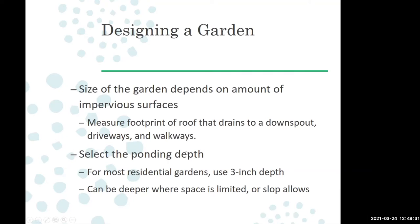Once you figure that out, decide how deep you want your ponding depth to be. If you're on a pretty flat site, three inches is typically adequate for most residential gardens. If you have a slope, you might need to go a little deeper to get the space as level as possible. The overall size of the garden and the depth together will allow you to figure out how much rain it can capture.